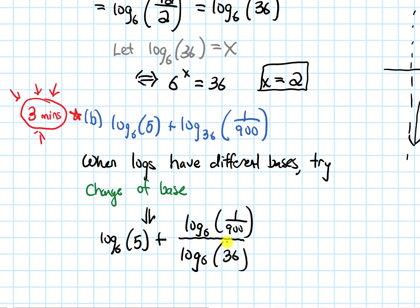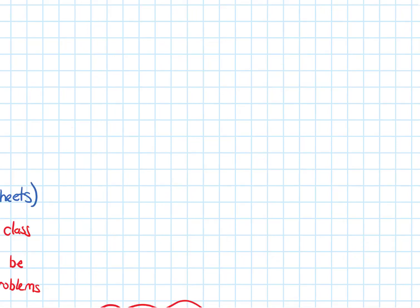Alrighty, so we notice that this log on the bottom is really nice. We can just evaluate this as 6 to what power equals 36? We actually did it over here already, and that power is 2. So that log on the bottom is just going to be 2. So this gives us log base 6 of 5, and then I have log base 6 of 1 over 900, and that whole thing, that second log was divided by 2. Let me just move that 2 to the front, so I get a 1 half.